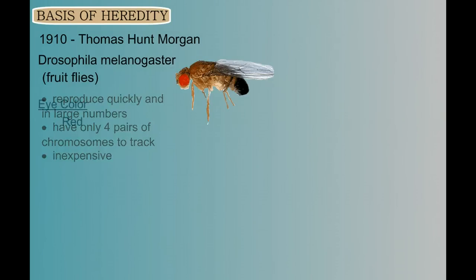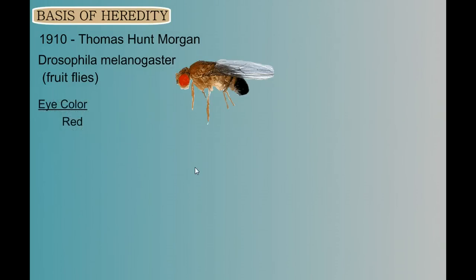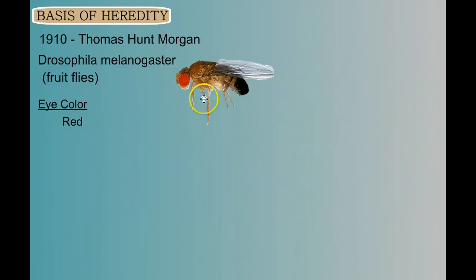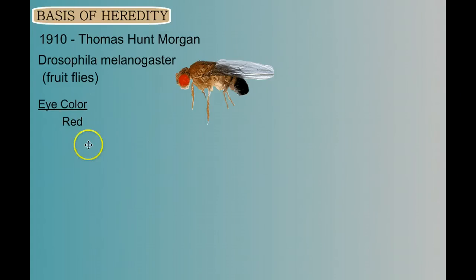One of the characteristics that's easy to see in fruit flies is the eye color. Most fruit flies have this very distinctive red eye — it's called wild type, but we're just going to call it red.